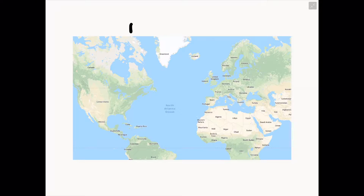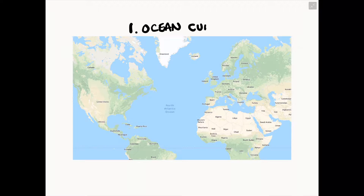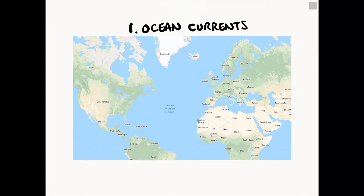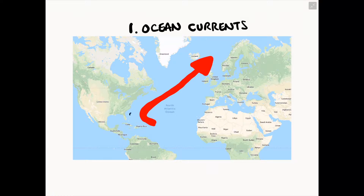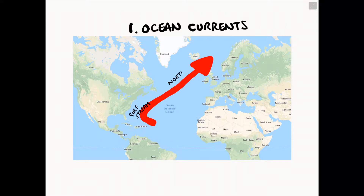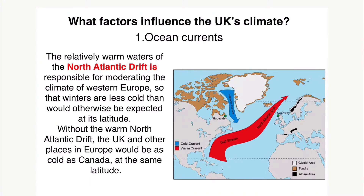The first factor which influences the UK's climate is ocean currents. Specifically, we are looking at the Gulf Stream and the North Atlantic Drift. This ocean current is responsible for moderating the climate of Western Europe so that winters are less cold than would otherwise be expected at this latitude. Without the warm North Atlantic Drift, the UK and other parts of Europe would be as cold as Canada at the same latitude. The ocean currents are drawn north through the Atlantic Ocean, providing warm water towards Britain.